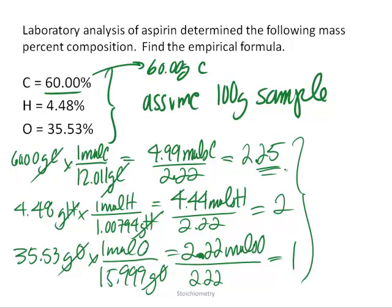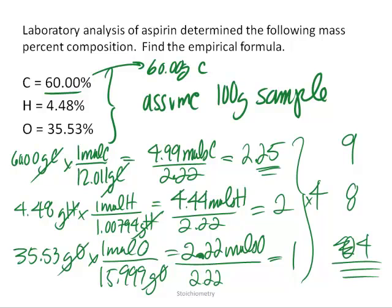To get rid of the decimal, think about 0.25 as a fraction — it's one-fourth — so multiply by 4 to get a whole number. Applying to all: 2.25 × 4 = 9 for carbon, 2 × 4 = 8 for hydrogen, and 1 × 4 = 4 for oxygen. Now that we have whole numbers, that is our empirical formula: the empirical formula for acetylsalicylic acid in aspirin is C9H8O4.